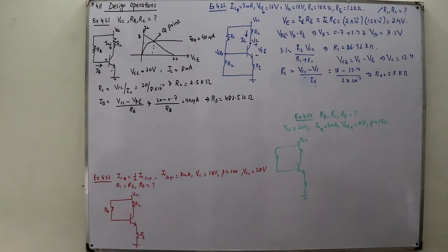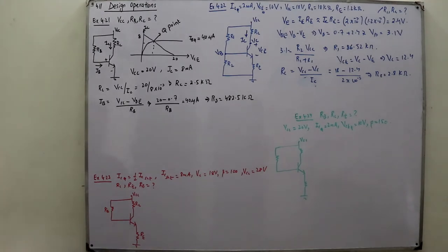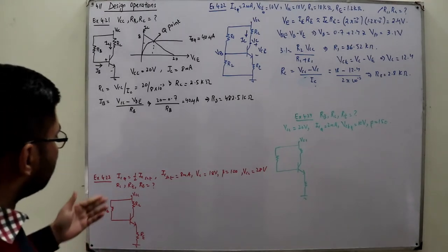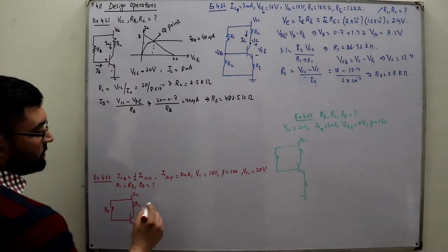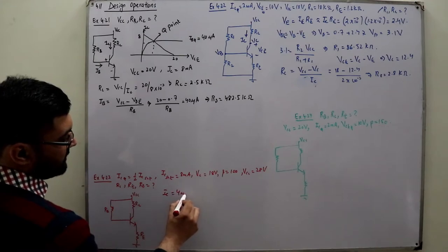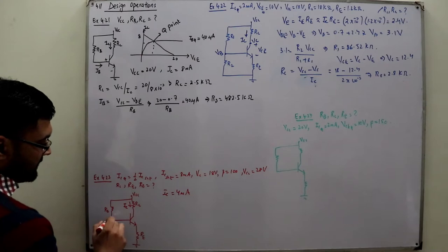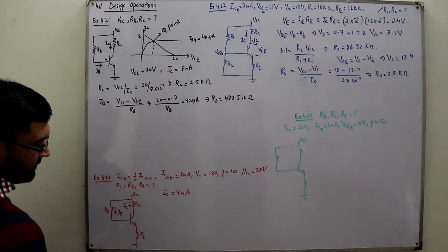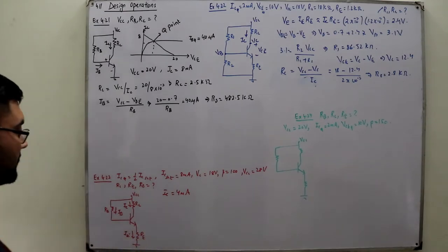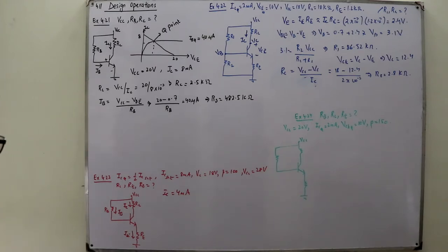Example number 3. This is an emitter bias configuration. ICQ is set to half of IC saturation, which means IC is 4 milliamperes. IB flows through the base branch and IE through the emitter branch. The unknowns are RC, RE, and RB.